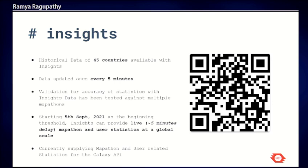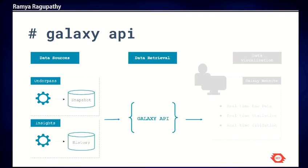On Insights, we have historical data of 45 countries loaded into the database, and this data is updated once every five minutes — so there is a lag of about five minutes to extract statistics from Insights. We have tested the statistics against multiple other data sources and they have been largely consistent, and we have also run pilots against a few mapathons.